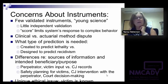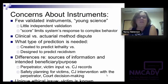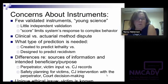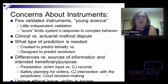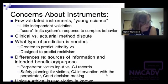The American Probation and Parole Association guidelines state that a thorough, consistent pre-release, pre-sentence, or intake investigation should be conducted in all cases of intimate partner violence. That's one of the key reasons for corrections folks to do a risk assessment.